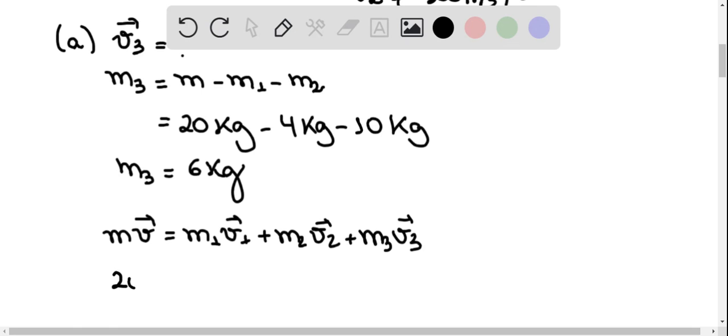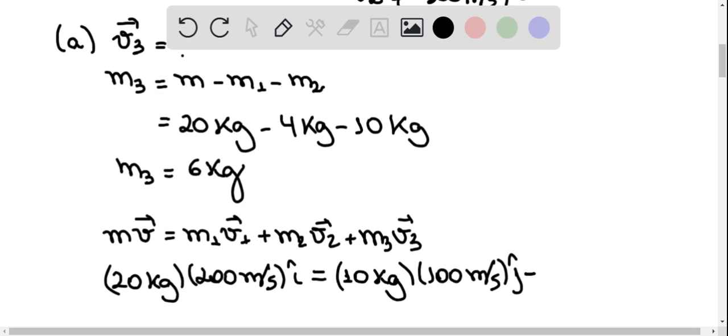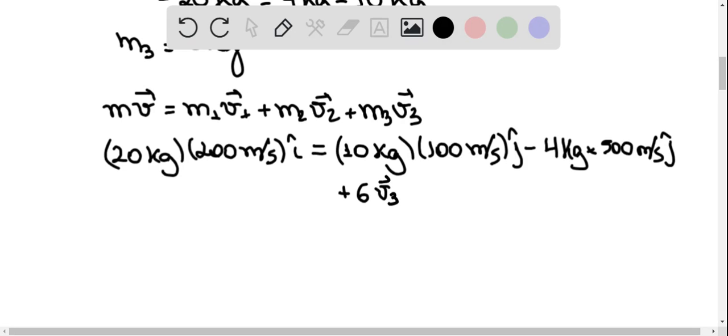So mv is 20 kilograms times 200 meters per second in the i direction, and this is equal to 10 kilograms times 100 meters per second in the j direction, minus 4 kilograms times 500 meters per second in the j direction, plus 6 kilograms v3. I'm just going to omit the unit from now on, but I'm always talking in the international system.